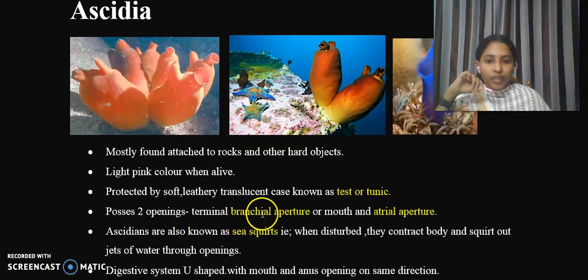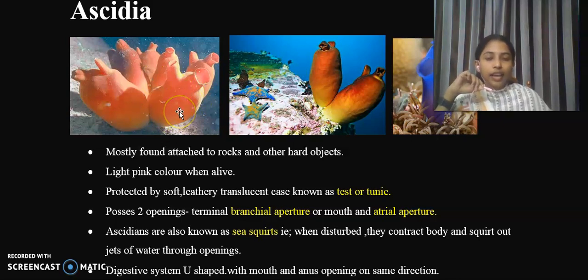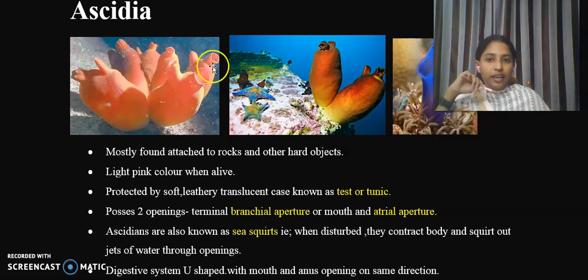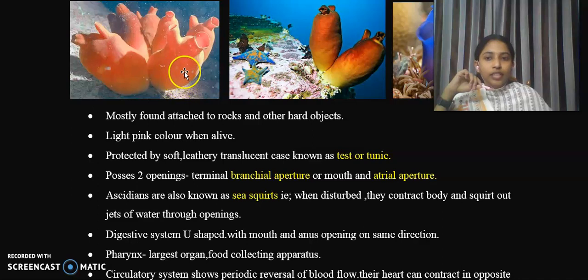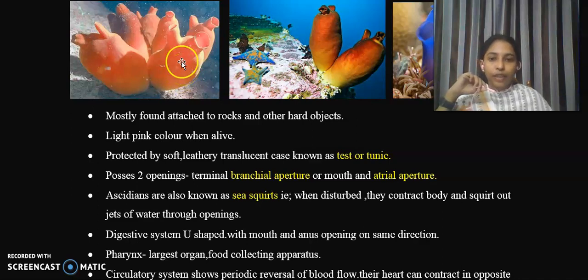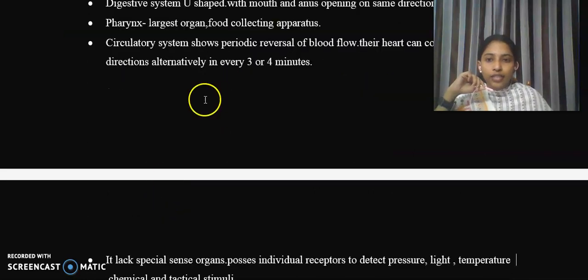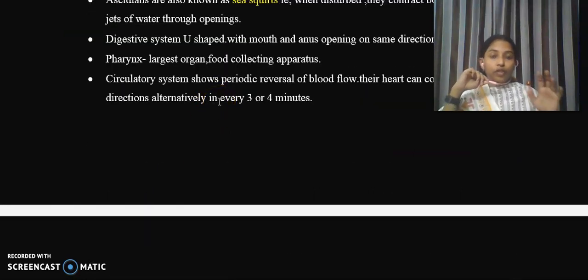Acidians possess two openings — the branchial aperture and the atrial aperture — and are known as sea squirts. When disturbed, they contract their body and squirt out jets of water through these openings, hence the name sea squirts. Their digestive system is U-shaped, with the mouth and anus opening in the same direction. They have a large pharynx, which is the food-collecting aperture.